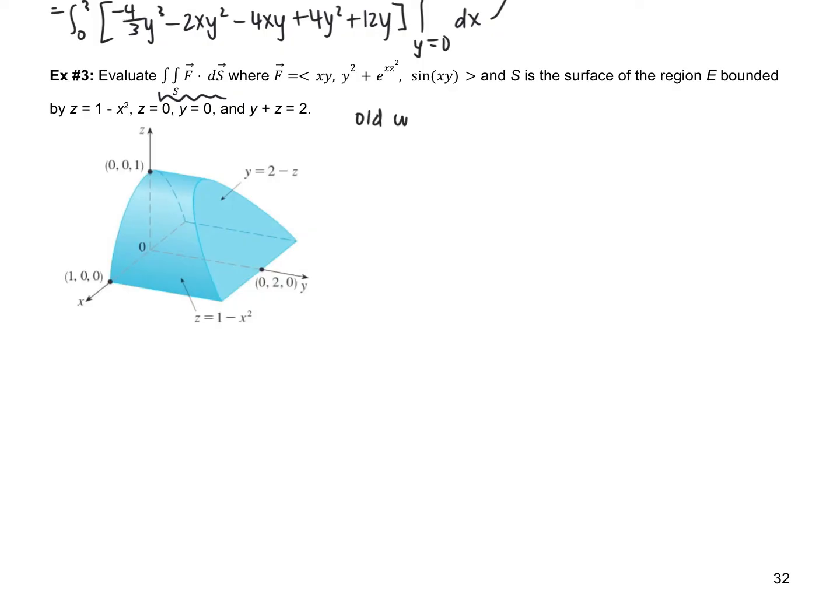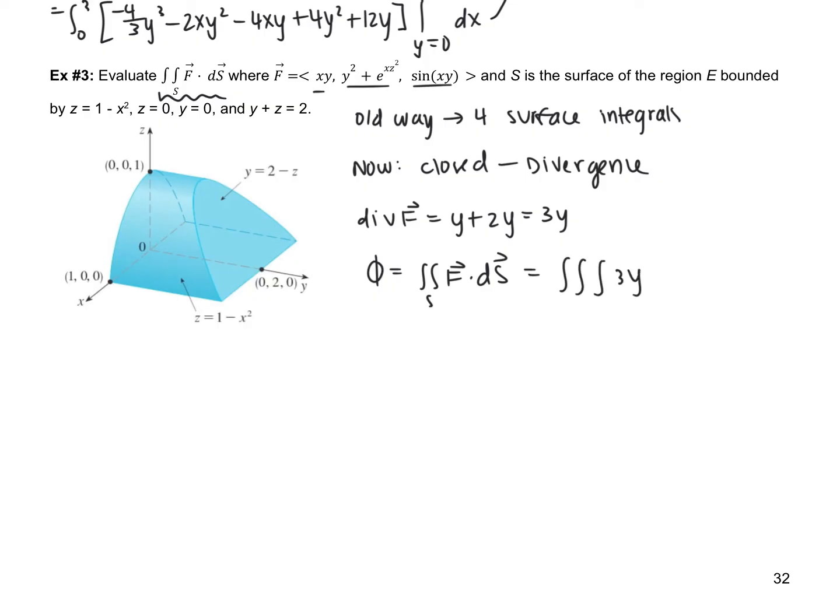Okay. So, not using the divergent theorem, we would have had to do four surface integrals. Now, because we have a closed figure, we can do divergence theorem using a triple integral instead of those four separate surface integrals. So, moving forward to find the divergence of F, taking all of our partial derivatives, we're going to get y add 2y, which is just plain old 3y. So, our flux then, which is the surface integral of F dot ds, is going to be the triple integral of 3y, and then I'm going to integrate with respect to y first, and then z, and then x.